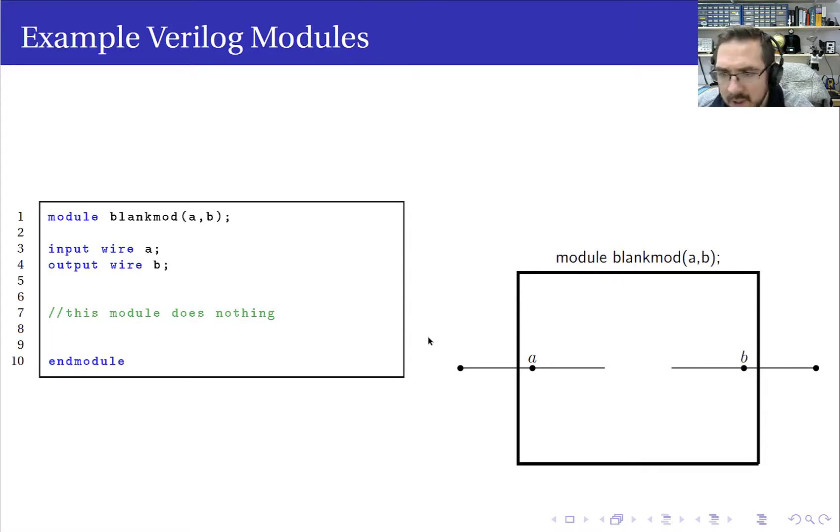So let's move forward to a module that actually has something within it. So this one is called invert mod. It's a very simple module, perhaps the most simple module that you can get. And it's just an inverter. So we have the basic structure of the module. Again, we have one input called A, one output called B.